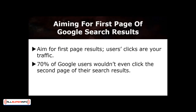Most online marketers and online business owners would love to see their products or services on the very first page of Google's search results — or even better, the featured snippets. That would mean your page is successfully optimized to grab Google's attention and put it on top of their search list. The clicks you receive from users are all that matters; their clicks are your traffic. Research shows that 70% of Google users would not even click the second page of their search results. If they can't find it on the first page, they would retype their search using different relevant keywords, and thus the cycle continues.